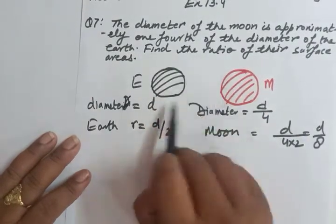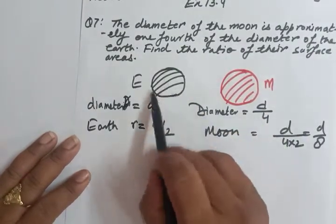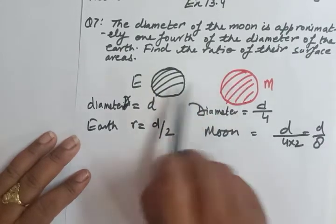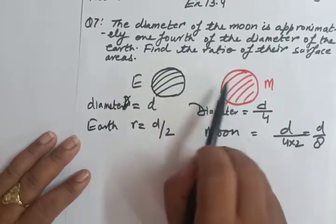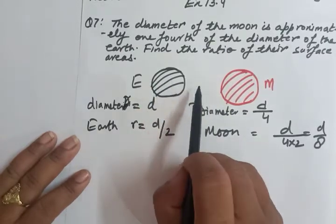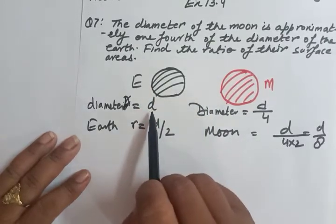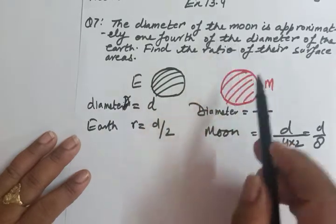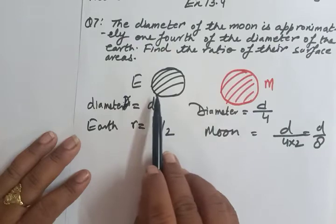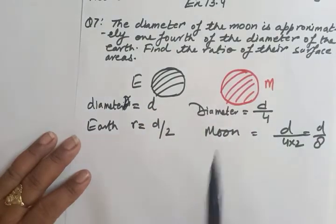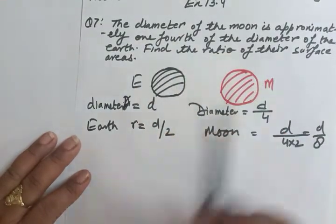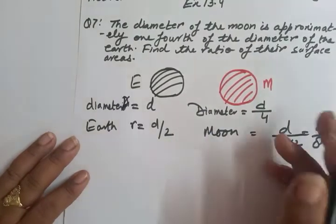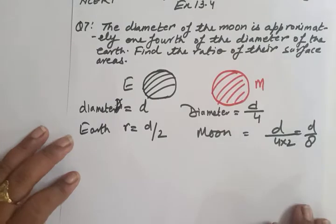The shapes in the diagram are not drawn to correct scale — I made the earth smaller and the moon bigger, just to show the difference using colors. The earth has diameter d, and according to the question the diameter of the moon is d/4. Now we have to find the ratio of their surface areas.